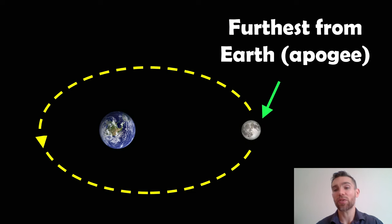On the opposite side, when it's further away, that's the apogee or the apocentre. That's the furthest distance between the moon and the Earth.